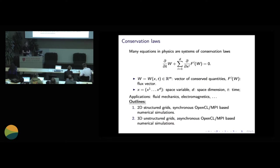Many equations in physics are systems of conservation laws. So you have such a system written here. It's a system of partial differential equations. And the main unknown of the system is W. So W is called the vector of conserved quantities. It's a vector with m components. And this vector depends on the space variable x and on time.